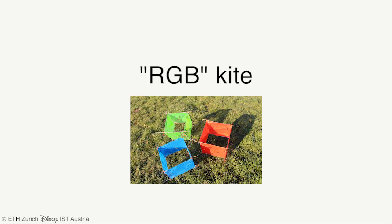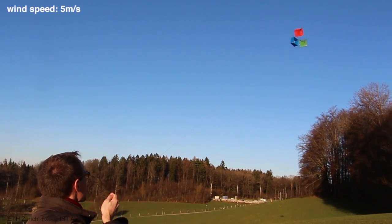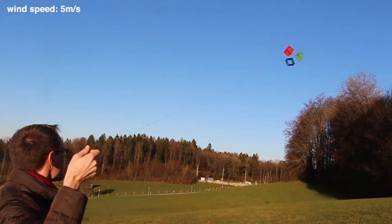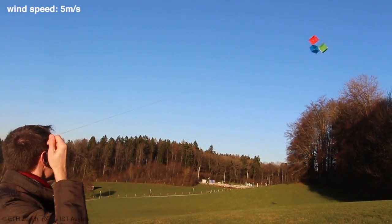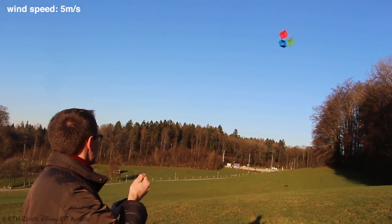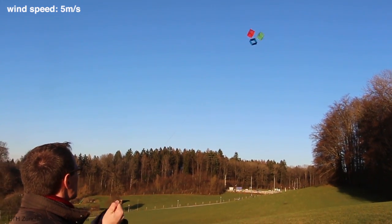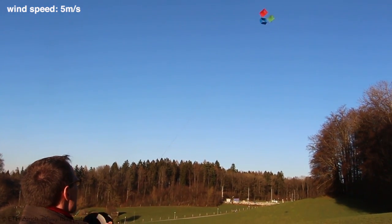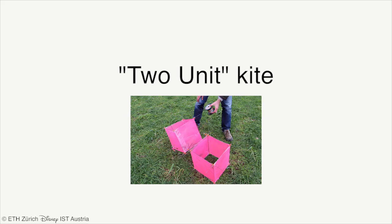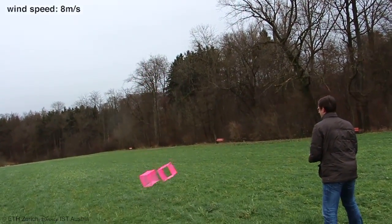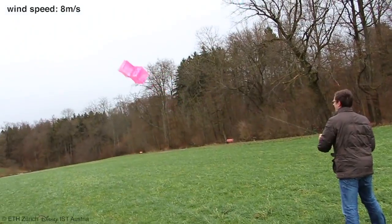In the following, we present 4 sample kites fabricated using our approach. This highly asymmetric kite, consisting of 3 units, flies stably in the air, even though occasional wind gusts perturb its balance. Even at higher and unstable wind speeds, our designed kite remains in the air.